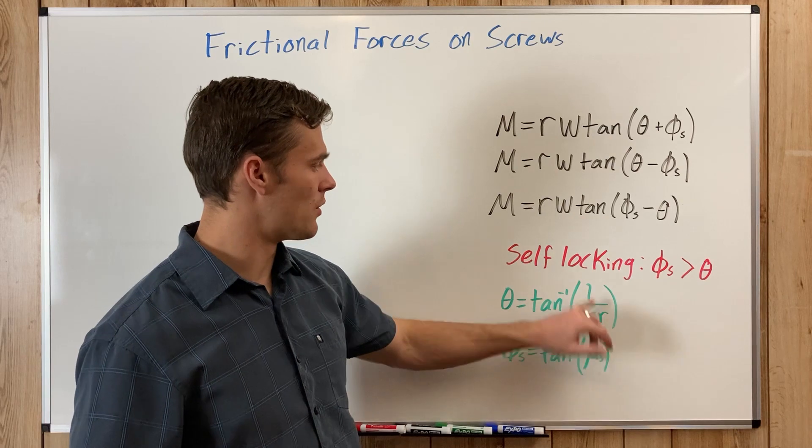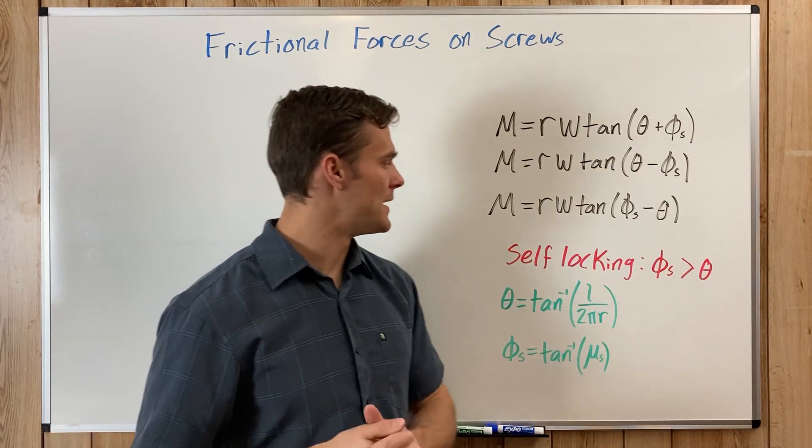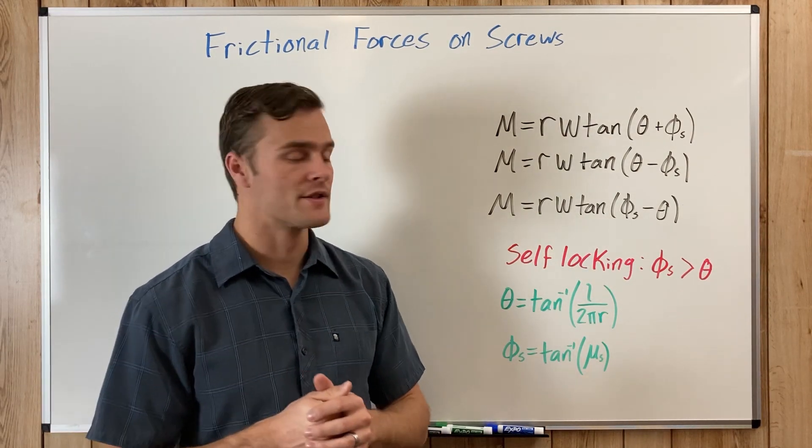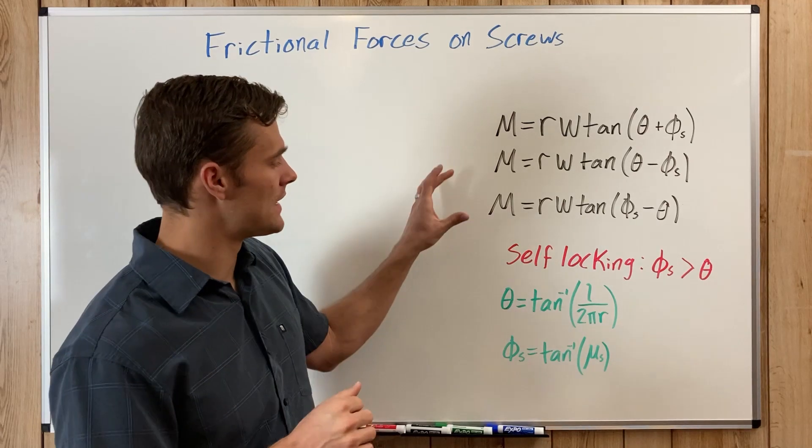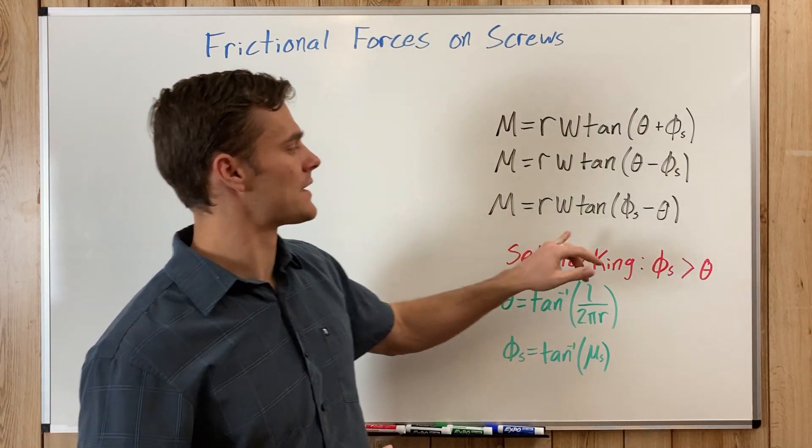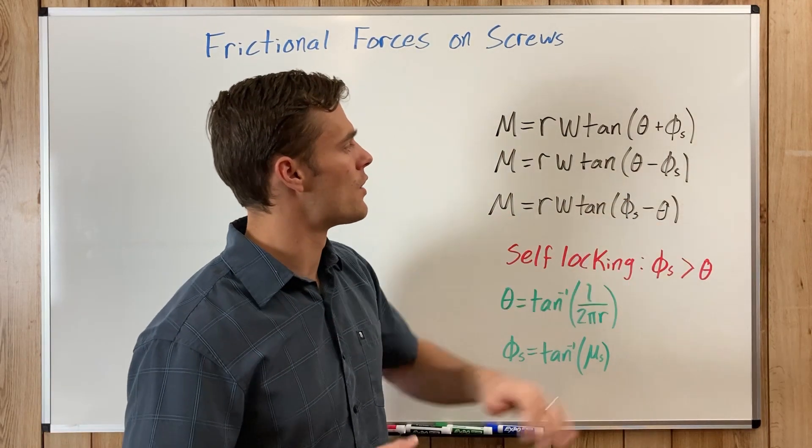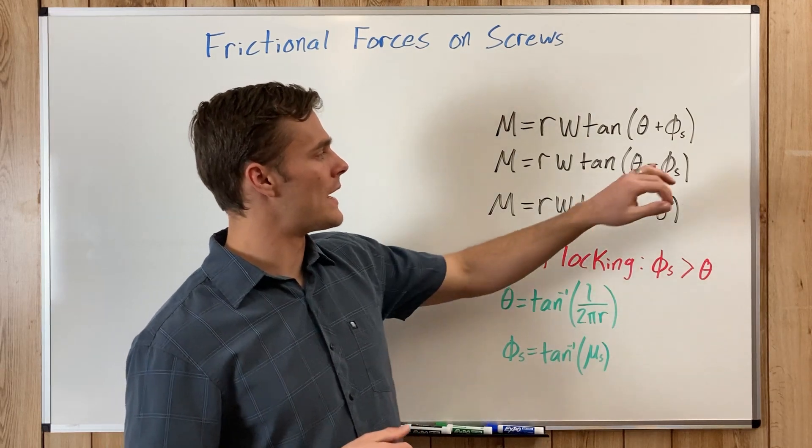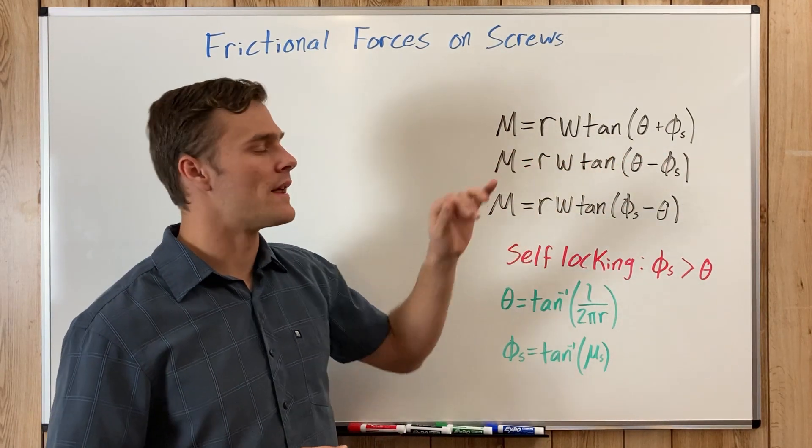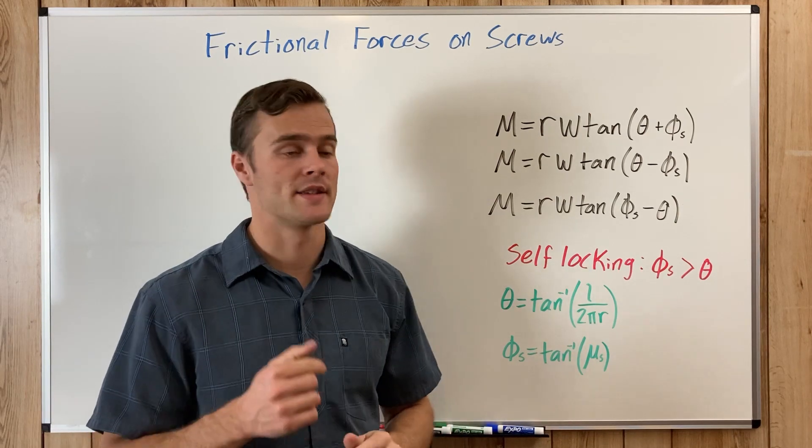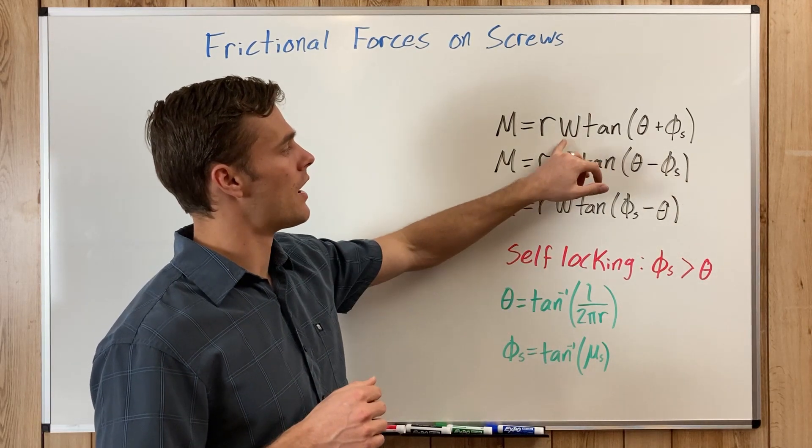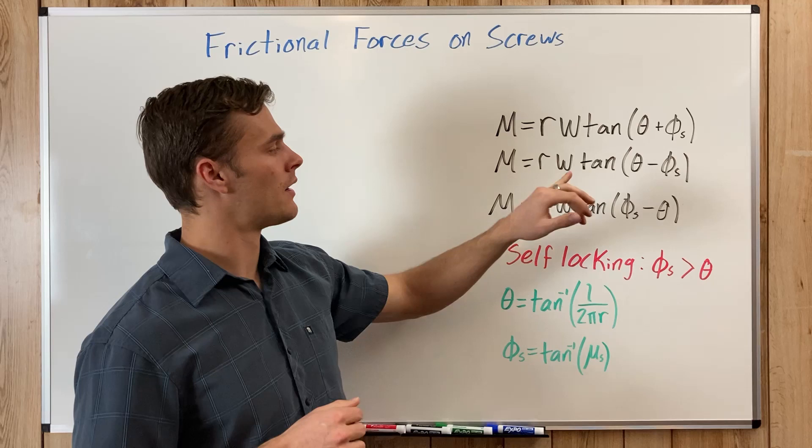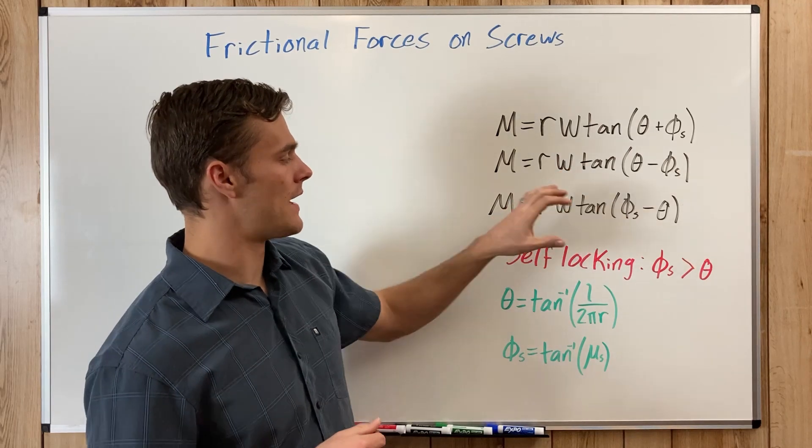These two R's are the same mean radius of the screw, and so these equations are almost identical except for a few sign changes with phi and theta. When phi and theta are added together, that is when the impending motion of the screw is in the opposite direction of our force W.